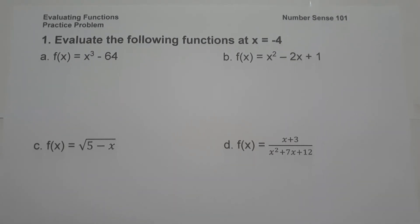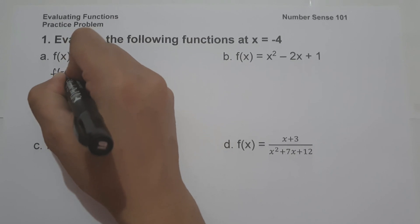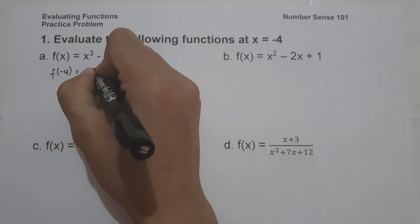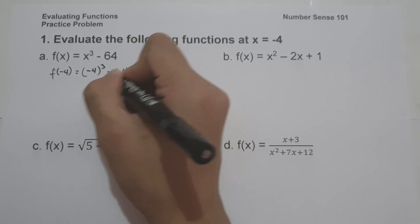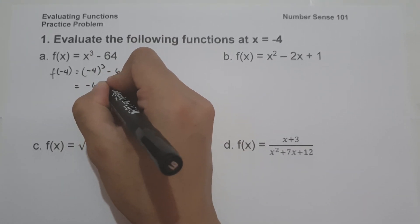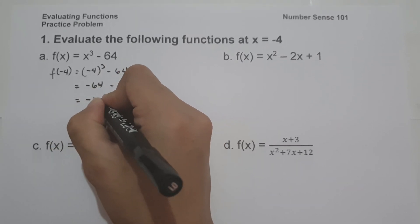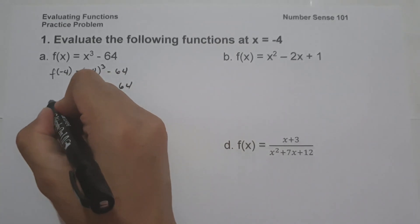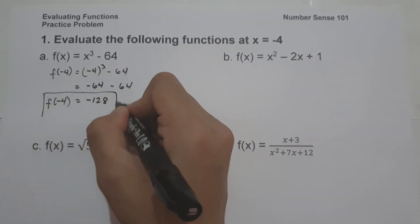Let's have the first example. f of x is equal to x cubed minus 64. To simplify, this will be f of negative 4 equals negative 4 raised to 3 minus 64. Negative 4 raised to 3 is negative 64, minus 64, and this will be negative 128. So this will be the value of f of negative 4 and this will be our answer.